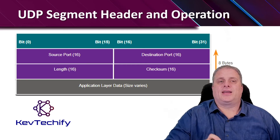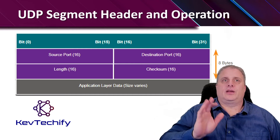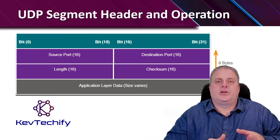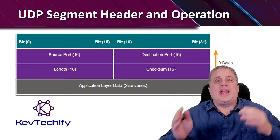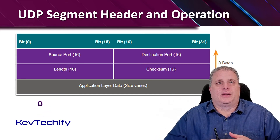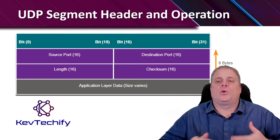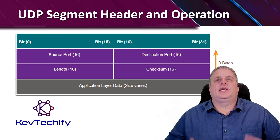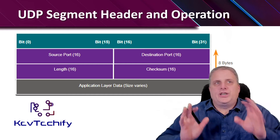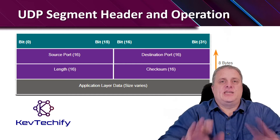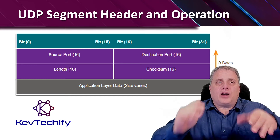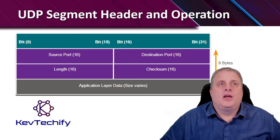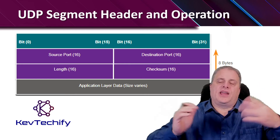UDP — User Datagram Protocol — is typically used in DNS, TFTP, NFS, and Simple Network Management Protocols. It's also used in real-time protocols like media streaming and VoIP. UDP is connectionless, so we don't have to establish connections like we do with TCP, and the transport layer protocol has a much lower overhead. Notice our UDP header here — there aren't all the fields we had in TCP. UDP is not connection-oriented and doesn't offer sophisticated retransmission, sequencing, or flow control. Those reliability functions have to be provided elsewhere if required. The low overhead makes UDP very desirable for simple request-and-reply transactions.